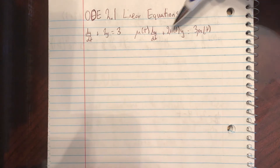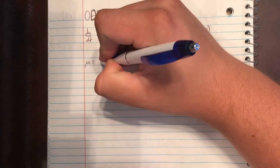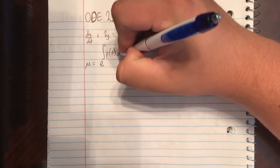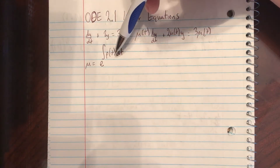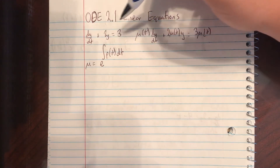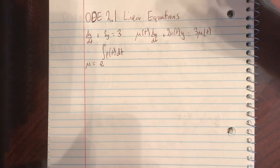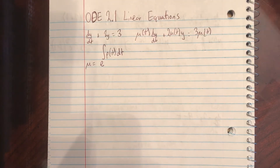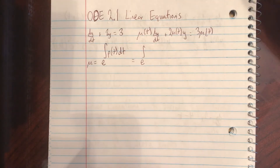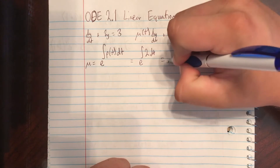So we can eventually integrate both sides and get our y of t. We know mu is going to be equal to e to the integral of p of t dt. p of t is actually what is next to y, and in this case it's 2. So this is going to be equal to e to the integral of 2 dt. We know the integral of 2 dt is going to be 2t, so it's going to be e to the 2t.